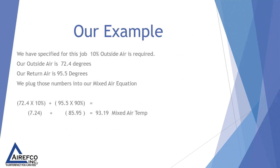In our example we have specified for this job that we want 10% outside air. Our outside air is 72.4 degrees and our return air temperature is 95.5 degrees. We plug those numbers into our mixed air equation: 72.4 times 10% is 7.24; 95.5 times 90% gives us 85.95. We add those two together and we come up with a mixed air temperature of 93.19.